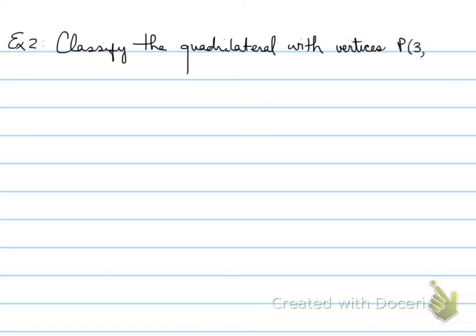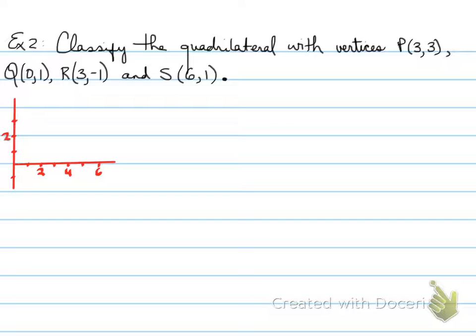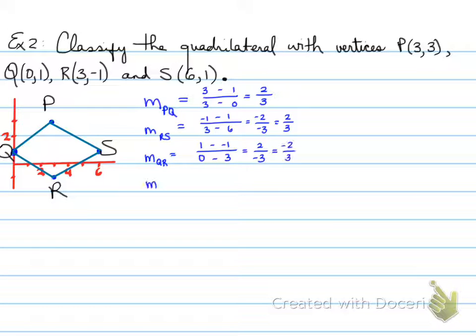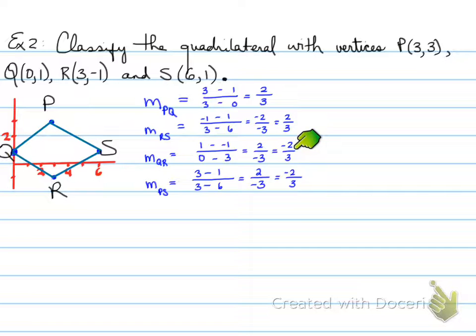In the last example, we're again asked to classify a quadrilateral with different vertices. First, take a quick sketch to connect the letters P, Q, R, S properly, then find the slopes of PQ, RS, QR, and PS. Once we calculate all the slopes, we find that opposite sides are parallel, but adjacent sides are not perpendicular — so there are no right angles. Since opposite sides are parallel, it's either a parallelogram or a rhombus.